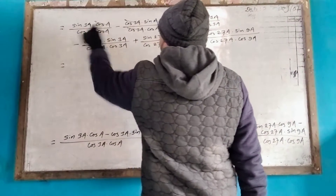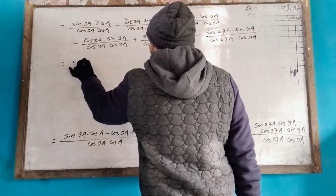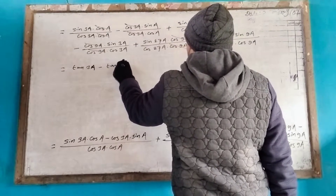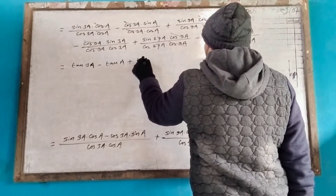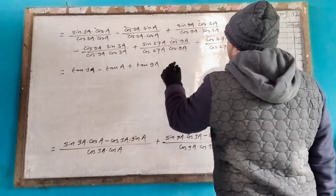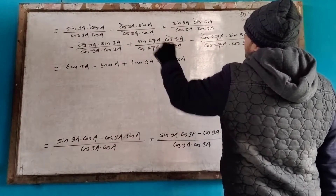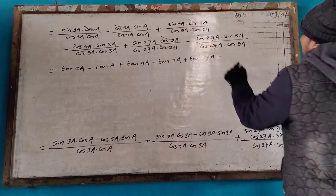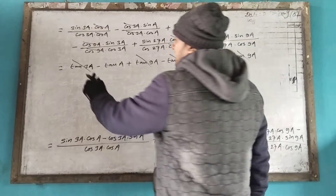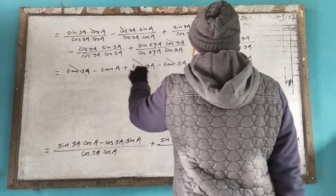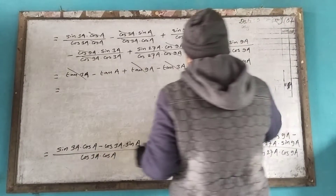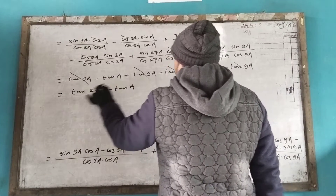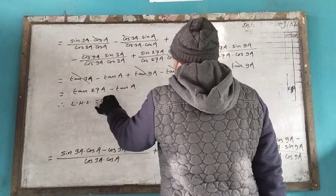This gives us tan 3a, minus tan 9a, plus tan 27a, minus tan 9a. The tan 3a terms cancel, and plus tan 9a minus tan 9a cancel. Therefore LHS equals RHS.